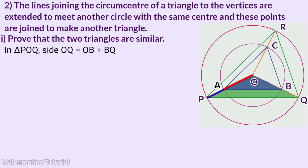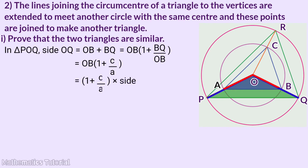Triangle POQ side OQ is OB plus BQ. So this becomes OB into 1 plus BQ by OB. This becomes OB into 1 plus C by A. So OB is one side of triangle AOB, scaled by 1 plus C by A.